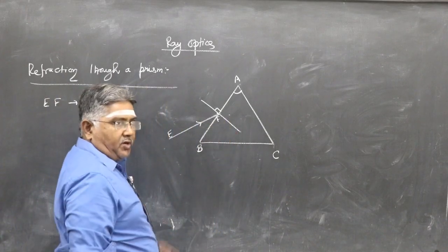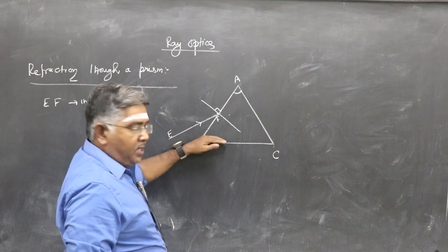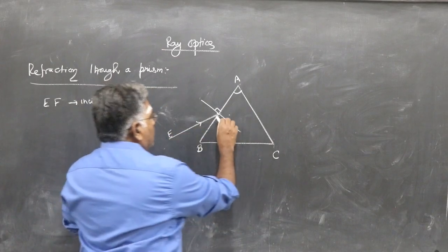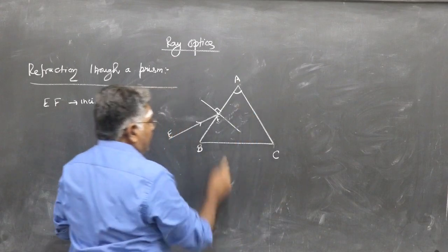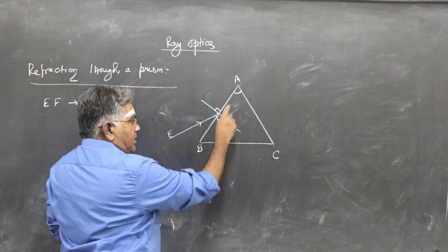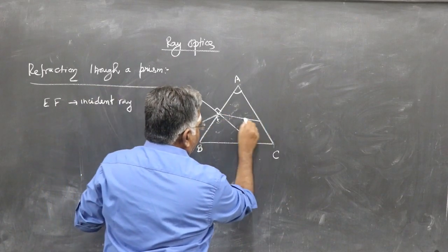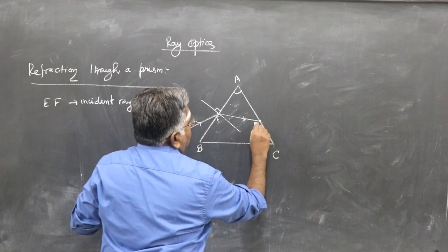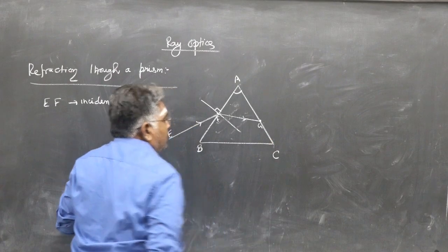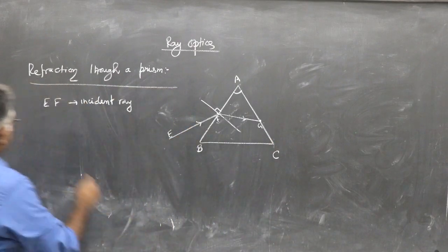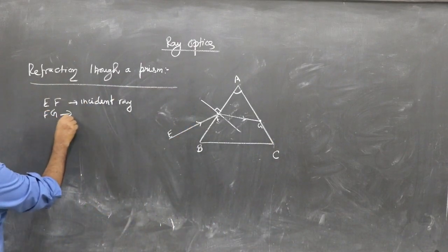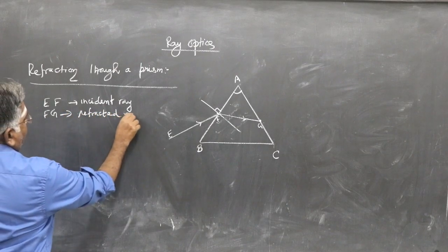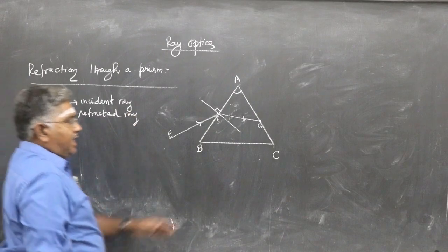After refraction, the ray has to bend towards the normal because it goes from rarer to denser medium. So FG is the refracted ray inside the prism.